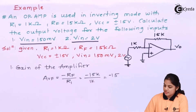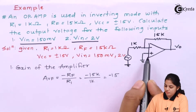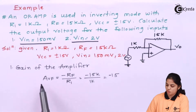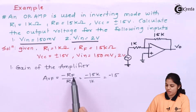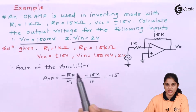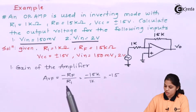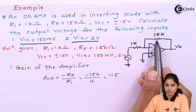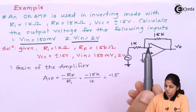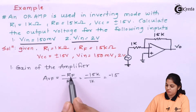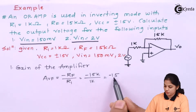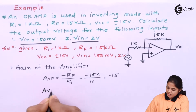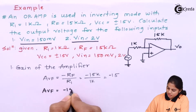Before that, since it is an inverting amplifier, the gain of the amplifier can be written as AVF equal to minus Rf upon R1, where Rf is equal to 15 kΩ and R1 is equal to 1 kΩ. Rf is the feedback resistance and R1 is the input resistance. So the ratio of Rf and R1 gives the value of minus 15. That means the closed-loop gain of the inverting amplifier is minus 15.